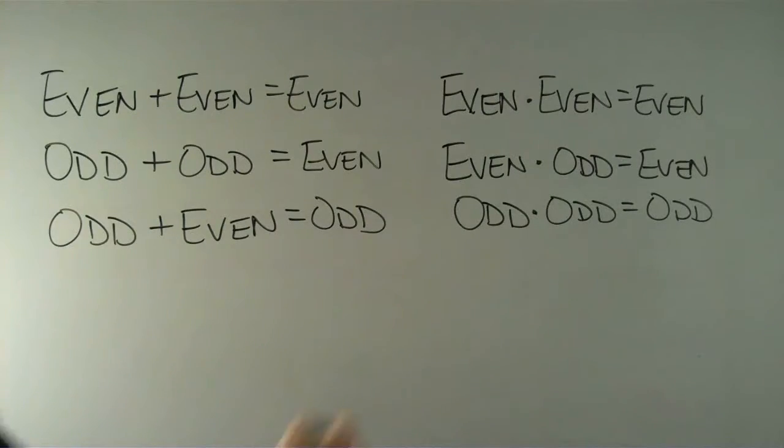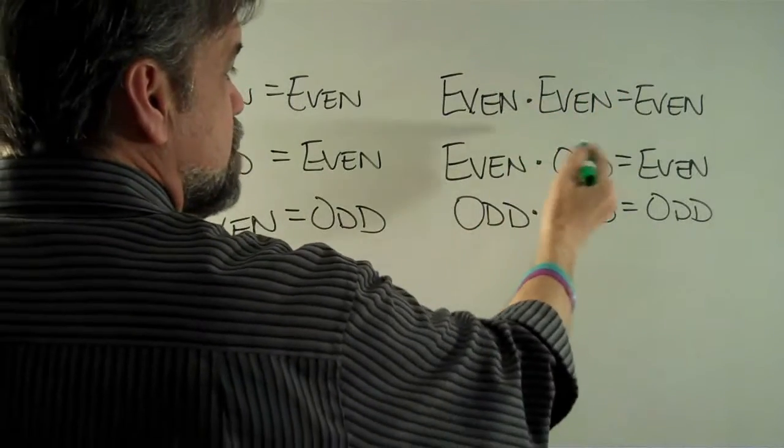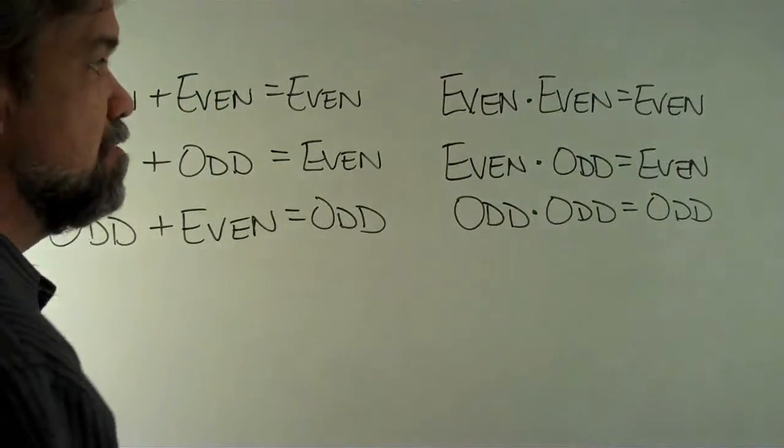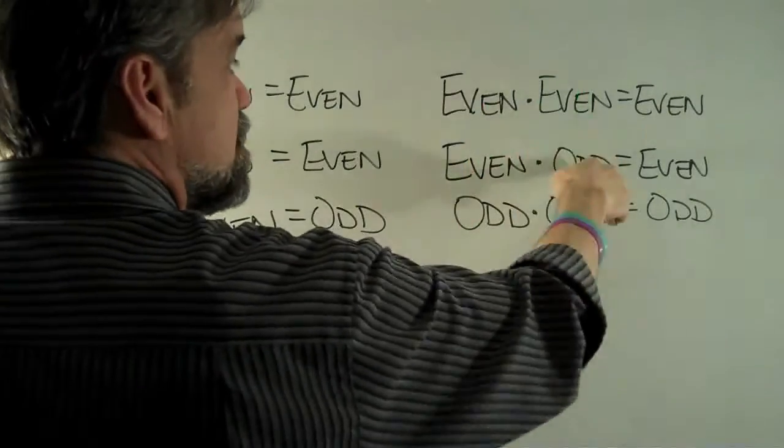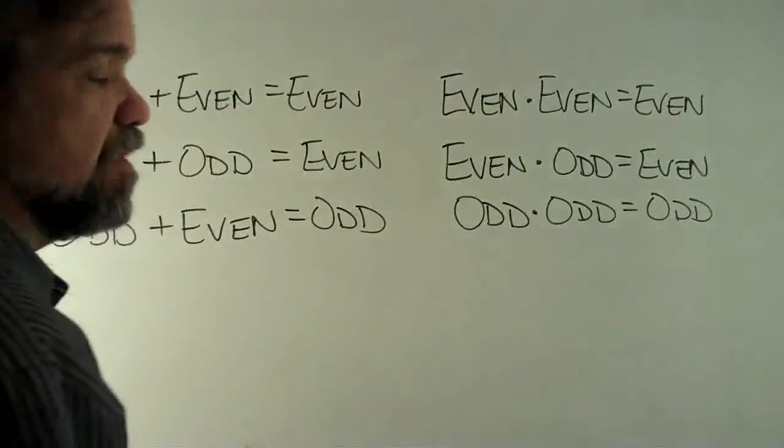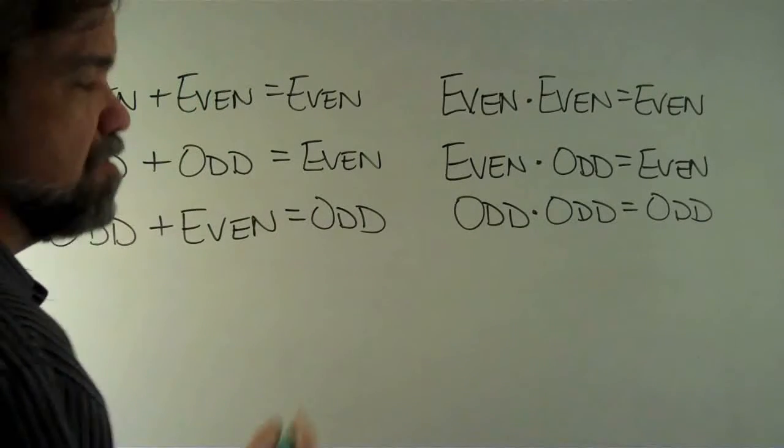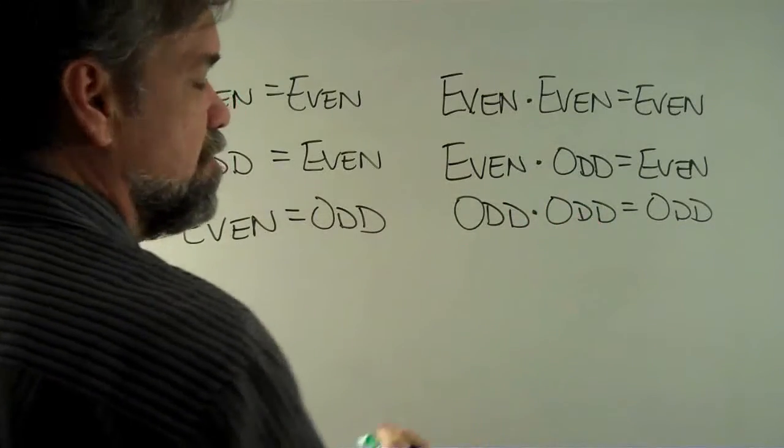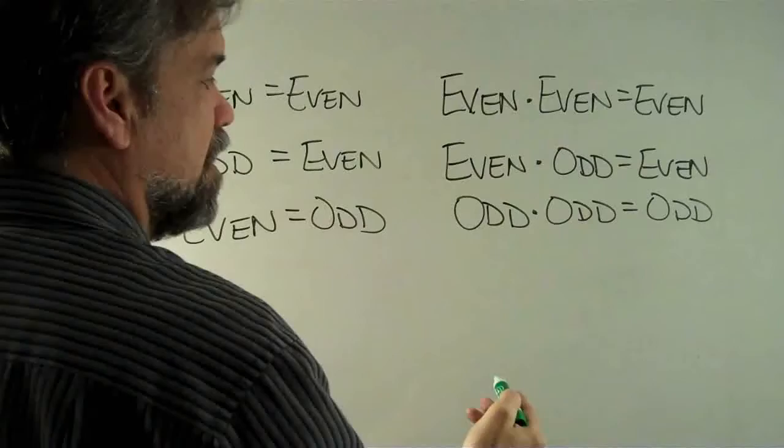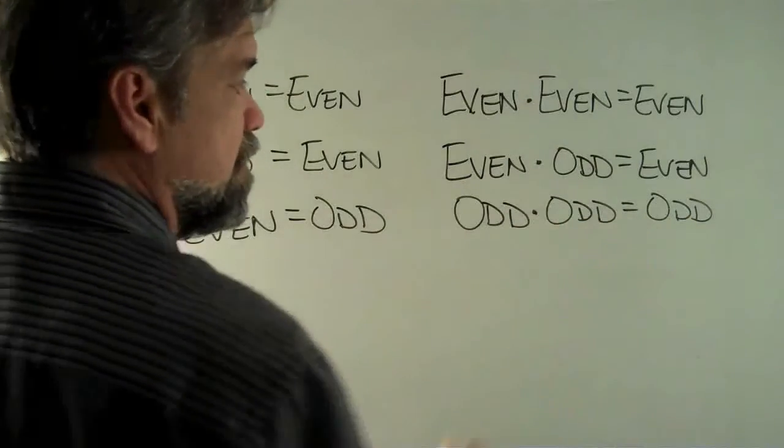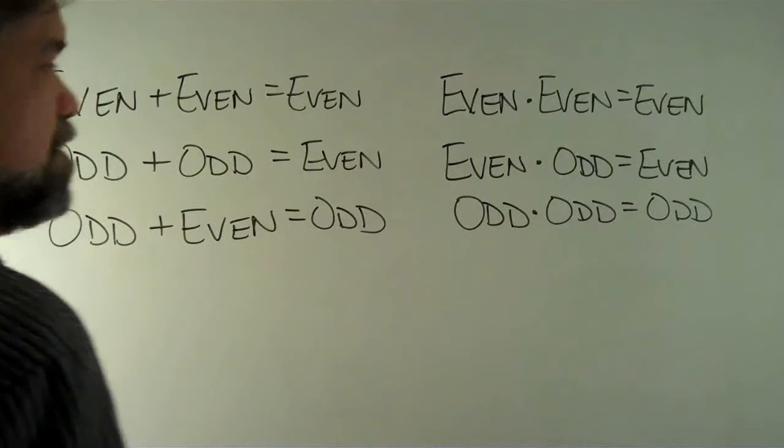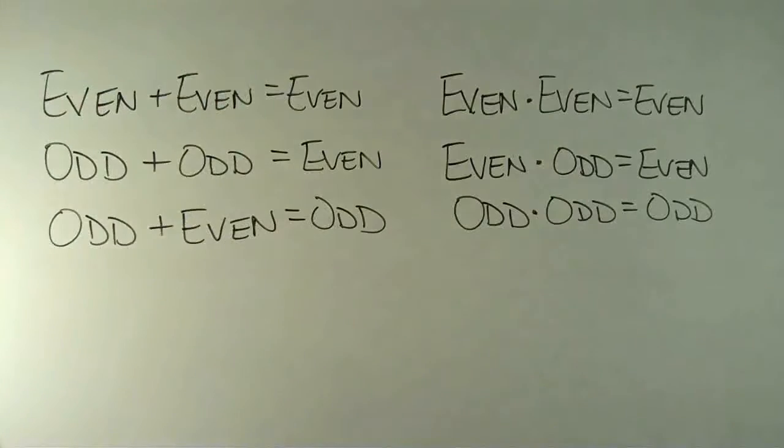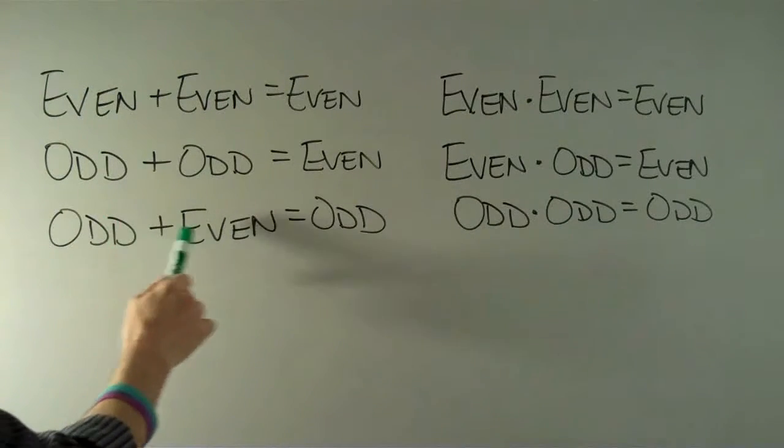Now let's think about the products. Even times even, even. Even times odd, even. Just think to yourself, two times any number is going to get you an even answer. So even times anything gets you even. The only time you can multiply two integers together and get an odd answer is if you multiply odd times odd. For example, 3 times 5 gets you 15, 7 times 9 gets you 63.